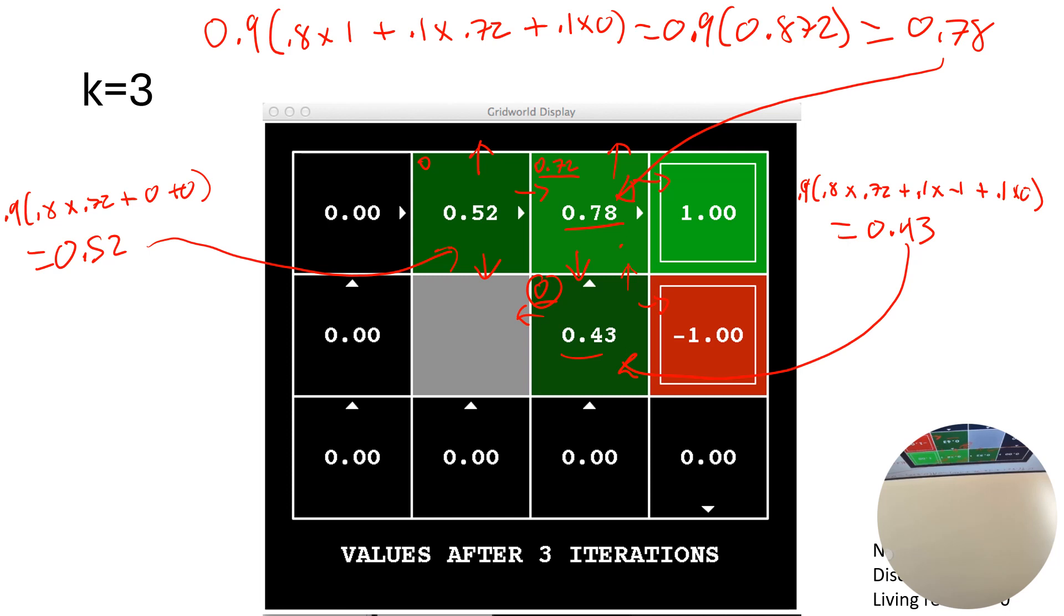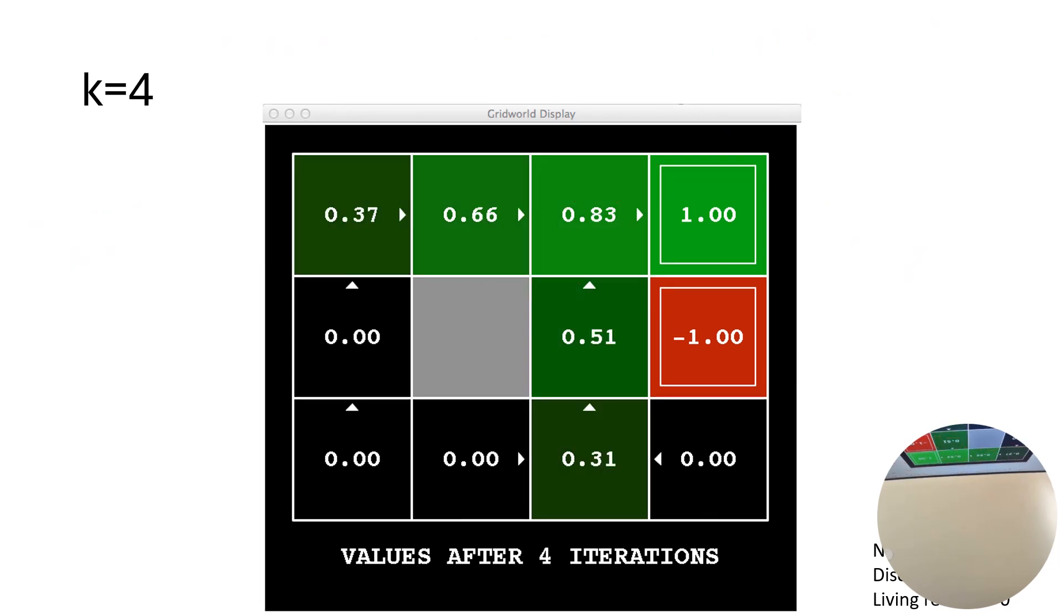So I'll go through and calculate out the next iteration of just that value, just so you have it. So if we think what was the old value there: 0.78. Old value below that: 0.43, and 0.52, just since we might need those.